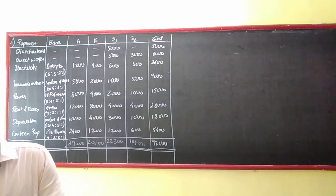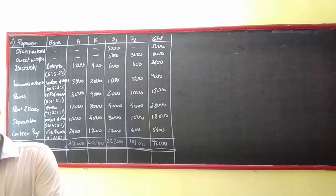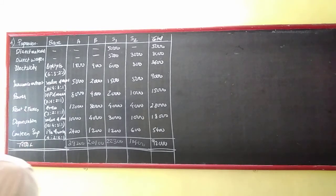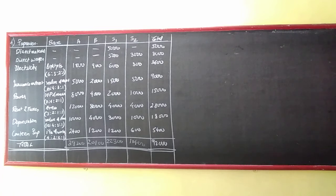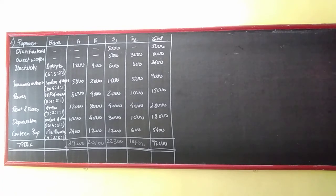Question number 4. A company is having two production departments namely AMD and two service departments S1 and S2. The expenses incurred during the month of March 2014 are as follows: electricity 3600, insurance on asset 9000, power 15000, rent and taxes 28000, depreciation 18000, and canteen expense 5400.